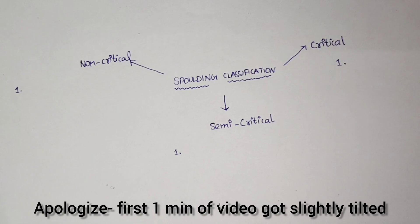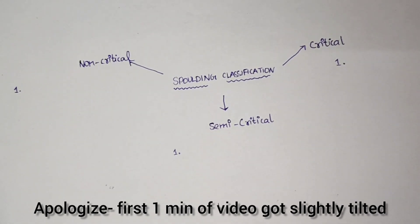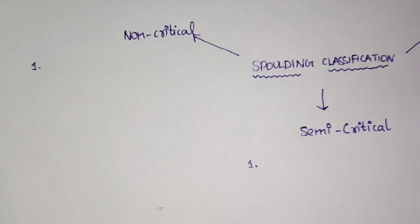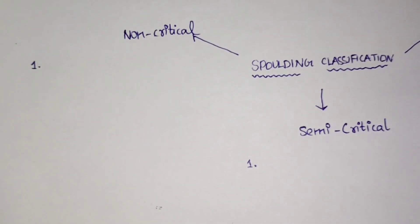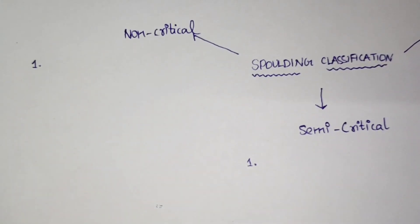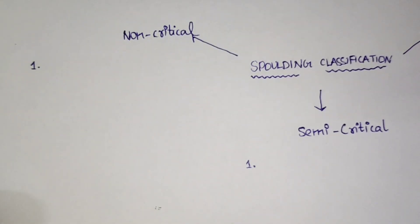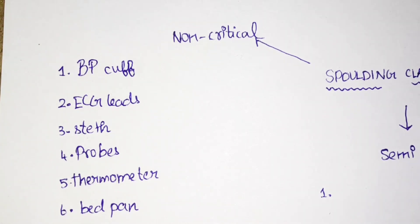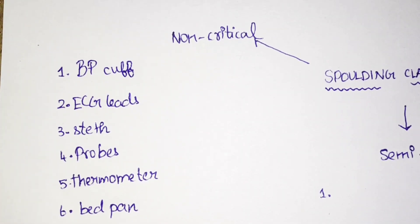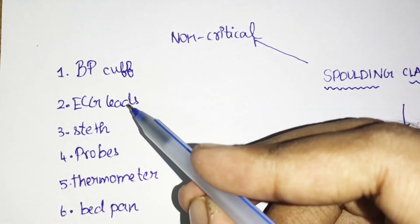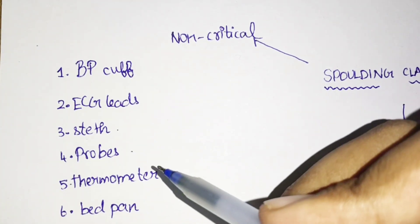We will now see each category one by one with examples — the examples are very important and can be a little confusing, but this will make it clear. Non-critical: the level of microbial infection risk is very low because these devices come in contact only with intact skin. Examples include BP cuff, ECG leads, stethoscope, probes like ultrasound probe when used on intact skin, and thermometer when kept in the axilla.